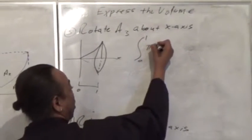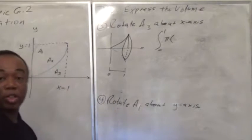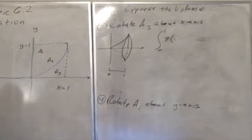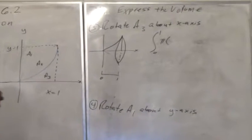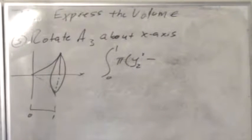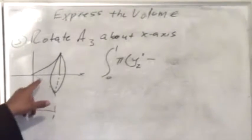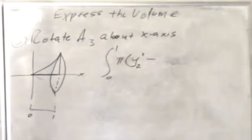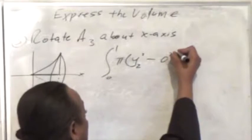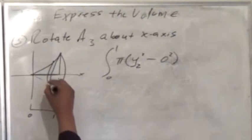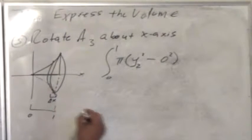My radius will come from pi. The outer function will be this A3, the blue one, which is y2, minus the lower function. It's the outer minus the inner. The inner function is actually the x-axis itself, which is y equals 0. And then these will all be based on delta x's.